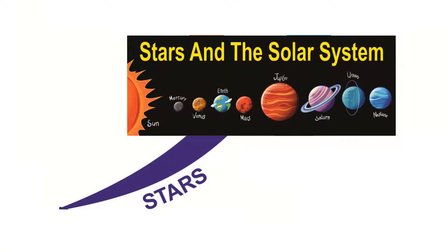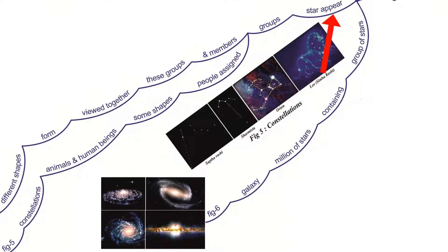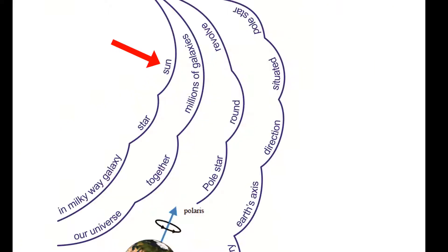Stars usually appear in groups, and members of these groups, when viewed together, form different shapes. People used to assign shapes of animals and human beings to those small groups. Those groups are called constellations. A group of stars which contains millions of stars is called a galaxy.